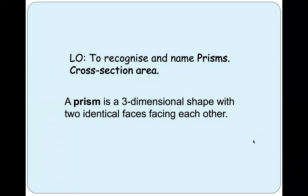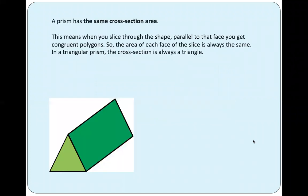Hello and welcome to Math Steps. Today we are going to learn about prisms and their cross-section area. You are going to need to know what the cross-section area is because you're going to use that knowledge when you find the volume of prisms. A prism is a three-dimensional shape, 3D as we call it shortly, with two identical faces facing each other.